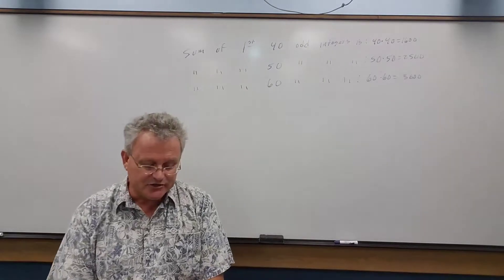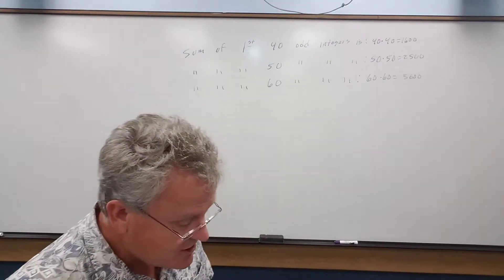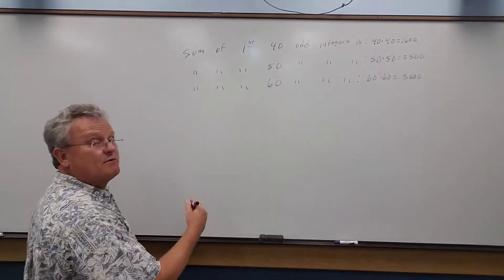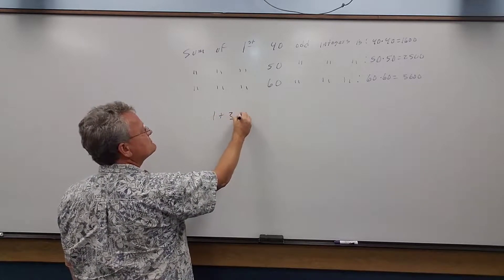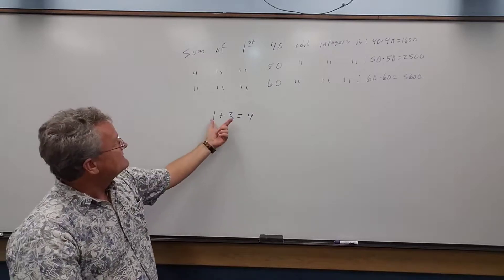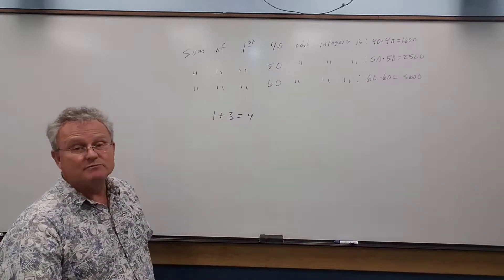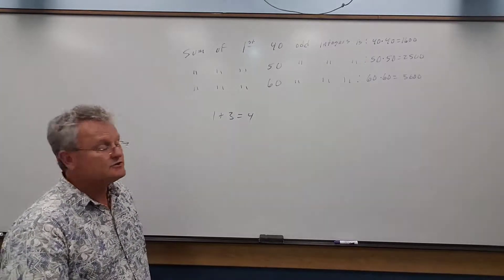Well, to answer this, to explain this, think of the sum of the first two odd integers, 1 plus 3. It's 4, and that is 2 times 2, the first two odd integers.